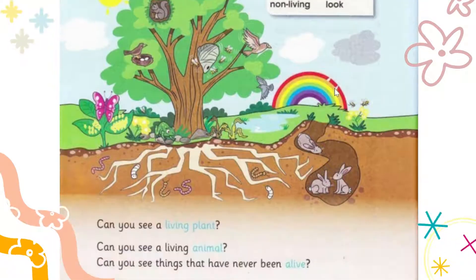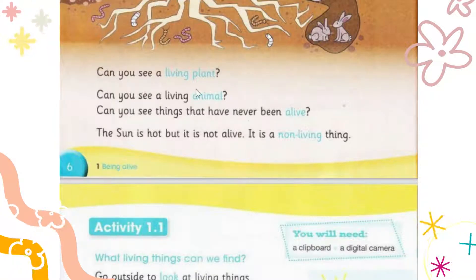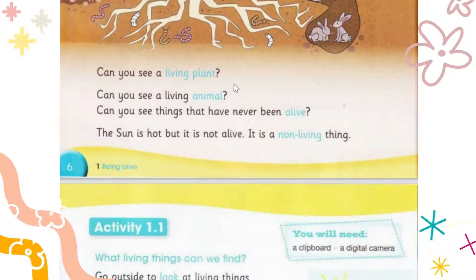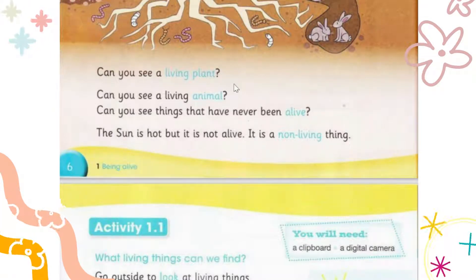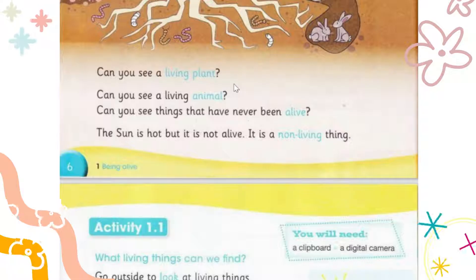Let's move on. This is a very interesting chapter. Here is a question: can you see a living plant? Many students think that something which is walking, running, eating, or sleeping is living. So how can you see a plant as living? We don't see a plant eating, we don't see a plant moving, we don't see a plant running. So how do we know that a plant is living? That's the question.